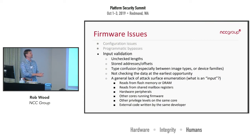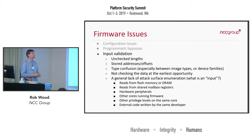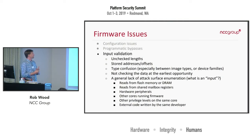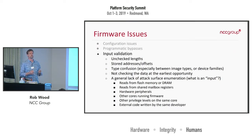Most of the firmware is written in C, so you have all of your classic input validation and memory corruption concerns. If you're not checking your length arguments, you can get buffer overruns. If you're storing addresses or offsets in external flash memory and not validating correctly when you read it back, it might have been modified. Type confusion is a fun one, especially image type confusion — if you're a company using the same signing key across multiple product lines, that gives the attacker an opportunity to mix and match firmware images.